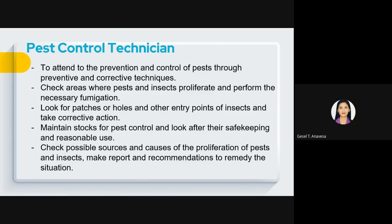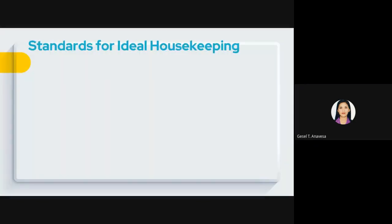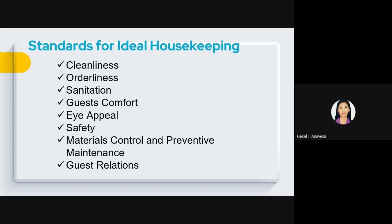These are the standards for ideal housekeeping. First, cleanliness — all areas must be immaculately clean, dirt-free, and sanitized. Second, orderliness — the proper positioning of things is very important because it facilitates efficiency. Furniture and fixtures are properly arranged and installed in appropriate locations, room amenities are properly installed in appropriate locations, and linens are neatly folded.